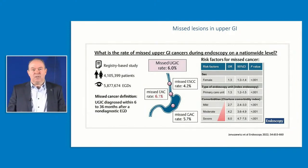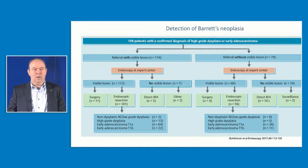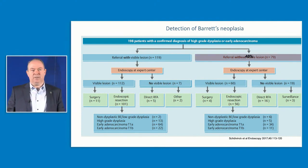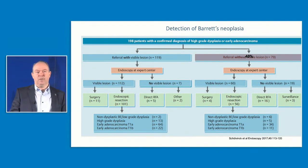Even when we know there is something going on in the esophagus, it is sometimes difficult to find lesions. A study from Amsterdam looking at referral of patients with esophageal dysplasia showed that 40% of patients were referred without a visible lesion — yet an experienced endoscopist could find a lesion in 60 of those cases.